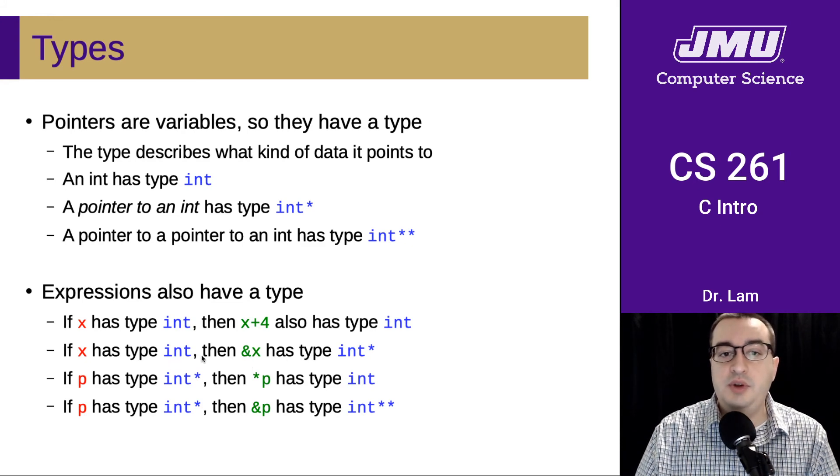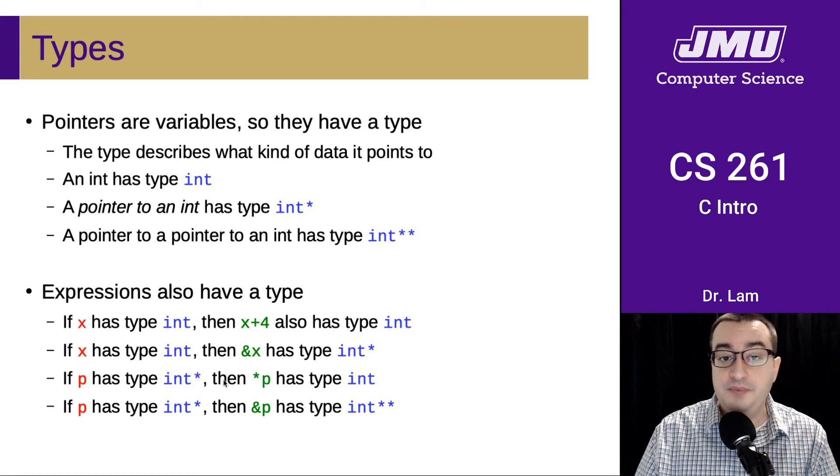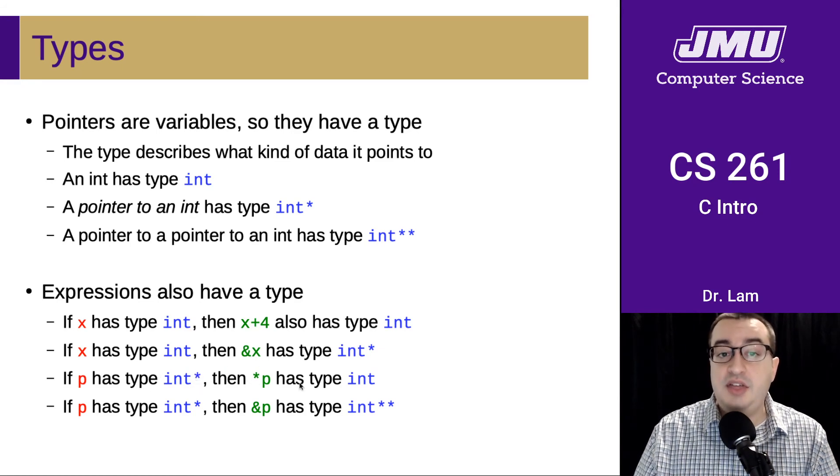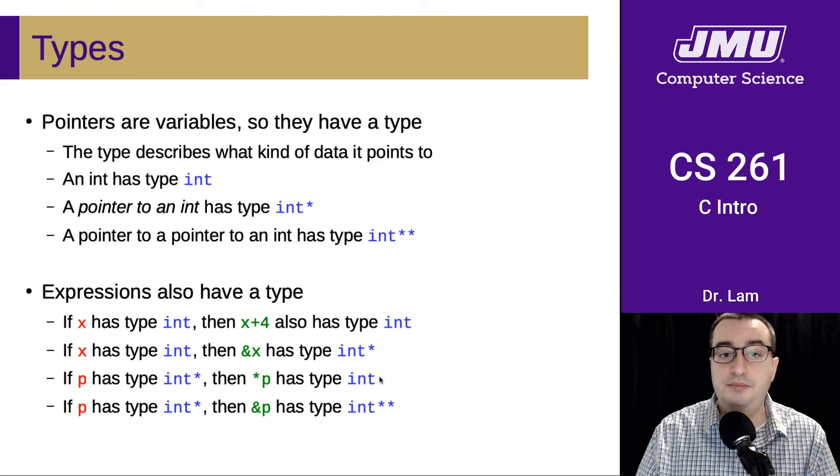Right? So if we have some particular type and we take the address of it, that adds a layer of indirection. So that adds a star to the type. If we have something that is a pointer and we dereference it, that removes a level of indirection from the type, or it removes a star from the type.